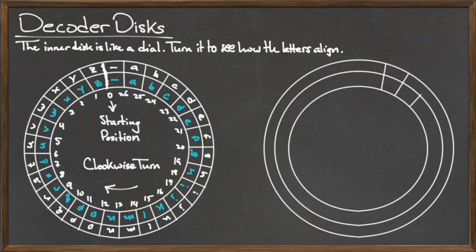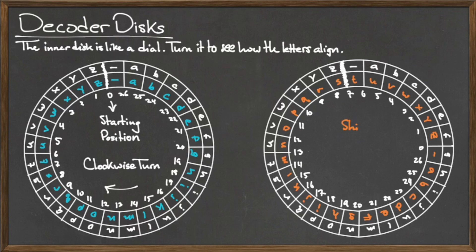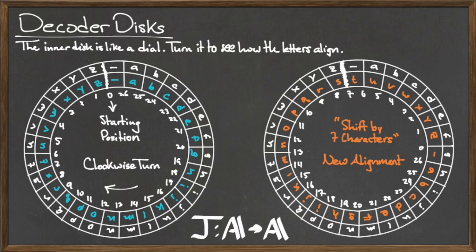We then shift the inner dial clockwise to encrypt the plaintext string. For example, if we wanted to use a Caesar cipher with a shift by 7 characters, we would start with the disk on the left, and after a shift by 7 characters, we would end with the disk on the right.